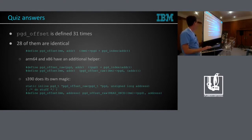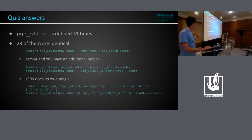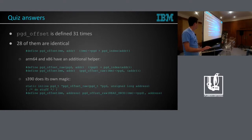28 of them are mostly identical, just plus or minus spaces here and there because old code never gets spaces around pluses. X86 and ARM64 have another helper — it gets the PGD of mem, converts it, and calculates the offset into it. And S390 does something completely different.